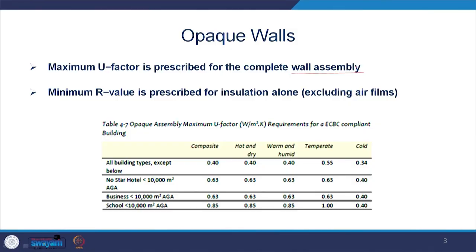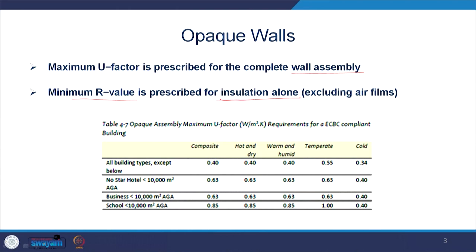We can look at the complete U value of the wall assembly, or alternatively we can look at the minimum R value — the resistance value — which is prescribed for insulation alone. Only the R value of insulation can also be used to meet compliance. This is the prescriptive approach, where these values have to be met.